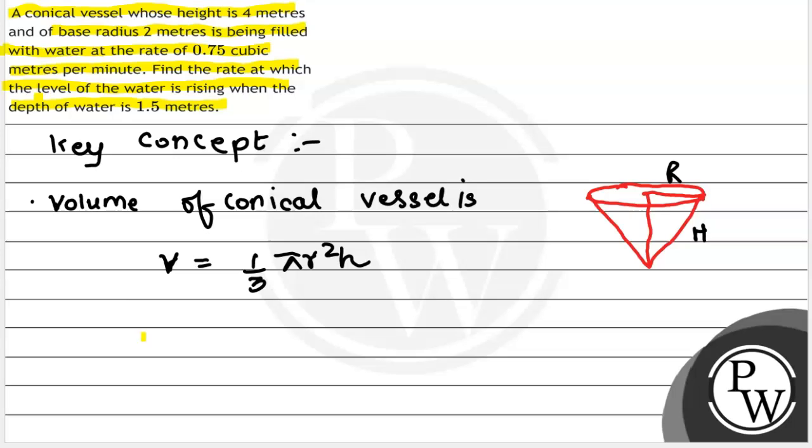Now, we need to find the rate when it goes up to one level. The depth of water is given. It has been filled here. The water level has height small h and radius small r.